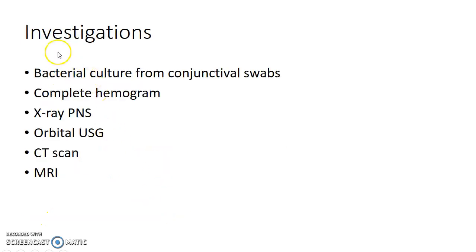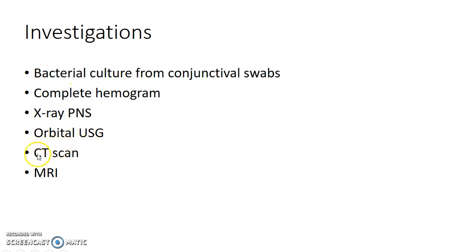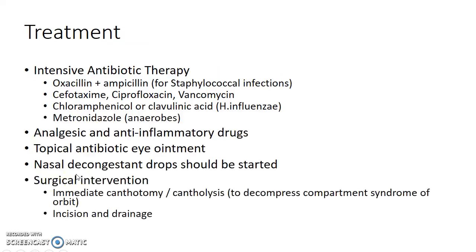What are the investigations done in a case of orbital cellulitis? These include bacterial culture from conjunctival swabs, complete hemogram, X-ray of paranasal sinuses, orbital USG, CT scan, and MRI.